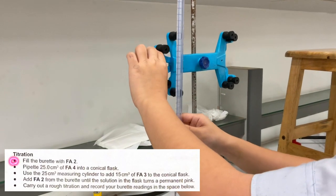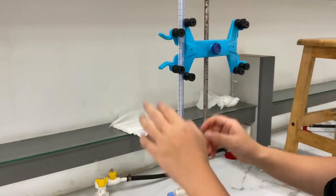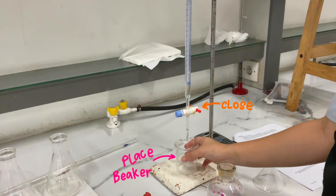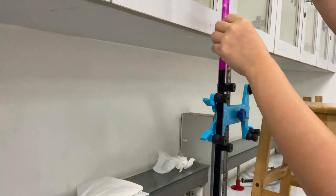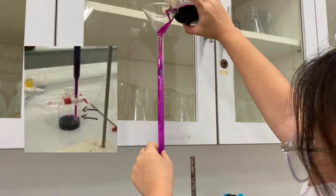The first step in titration is to fill the burette with FA2. When doing this, don't forget to close the burette, and you can also place a beaker below it to prevent spillage. For accurate titrations, the bottom of the burette should be filled as well.